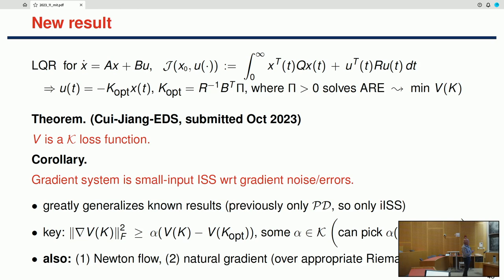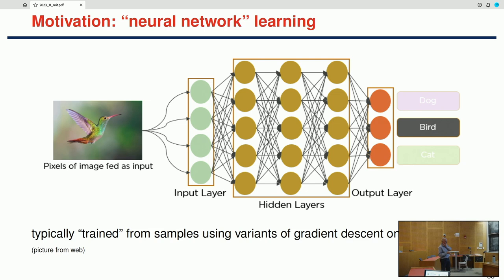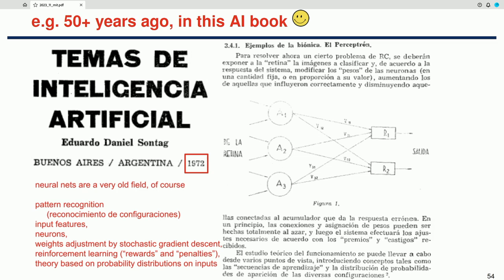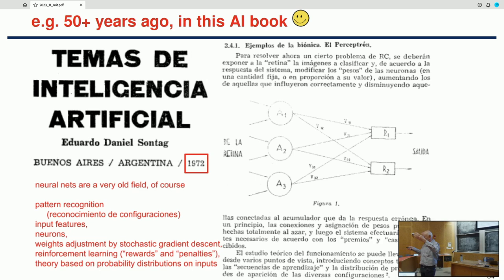We also have results for Newton flows and natural gradients—a version of gradients given a Riemannian metric—in the same paper. I want to briefly touch on another research area. We all know about neural networks for classification. Interestingly, fifty-one years ago, I wrote a book in Argentina in 1972 where I was looking at neural networks, interested in learning, talking about pattern recognition, input features, and weights in networks—at that time only perceptrons with no hidden units.